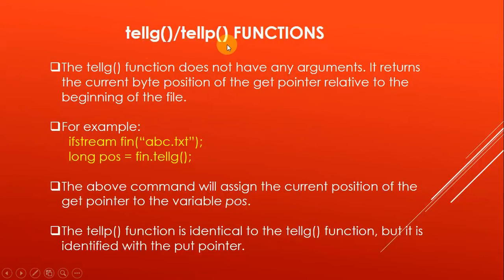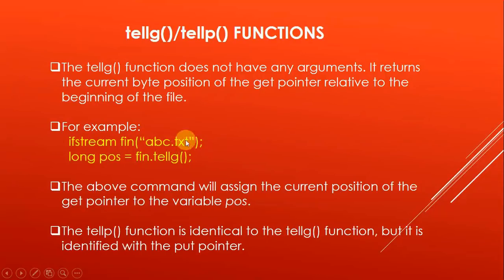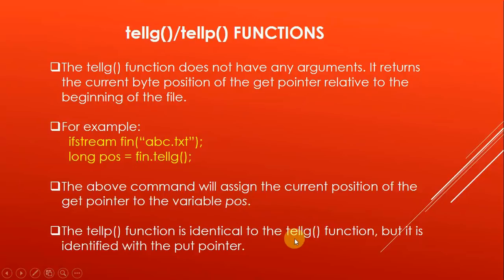Now let us talk about tellg() and tellp(). The tellg() function does not have any argument. It returns the current byte position of the get pointer relative to the beginning of the file. For example, if fin is an object of ifstream class attached to abc.txt, then pos = fin.tellg() assigns the current position of the get pointer to the variable pos. The tellp() function is identical but is identified with the put pointer and requires an ostream object.